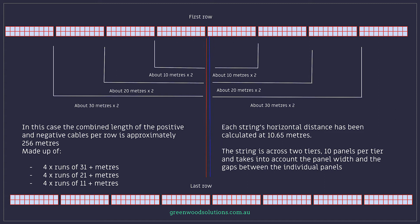In this case the combined length of the positive and negative cables per row is approximately 256 meters made up of four runs of 31 plus meters, four runs of 21 plus meters and four runs of 11 plus meters.